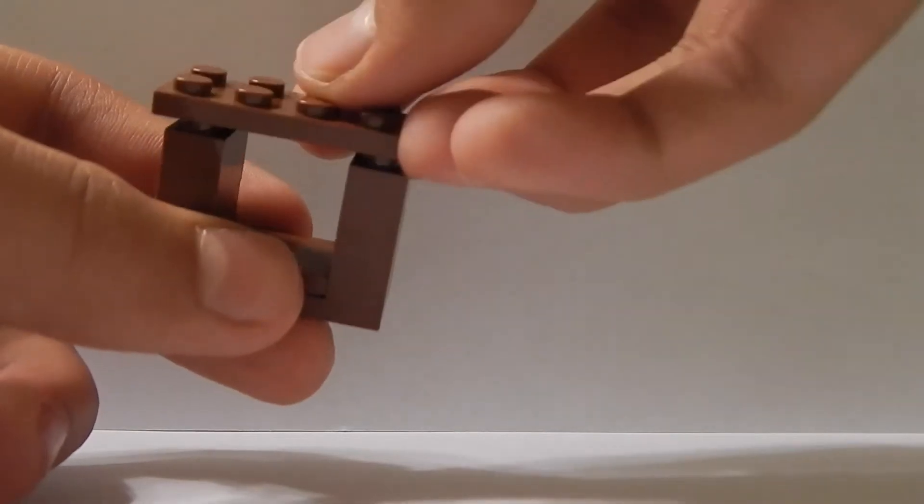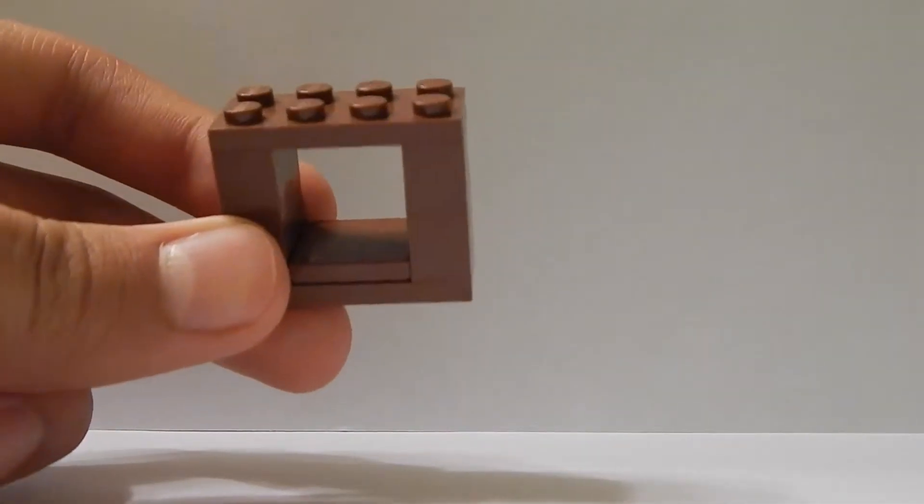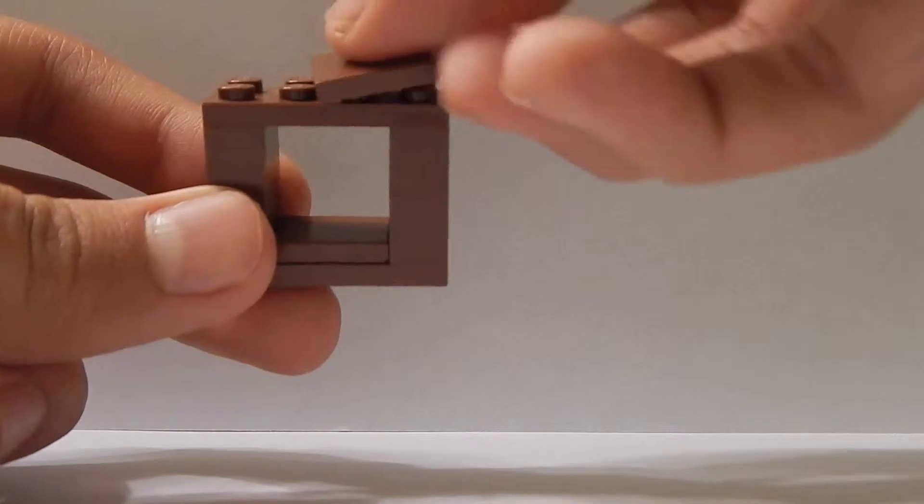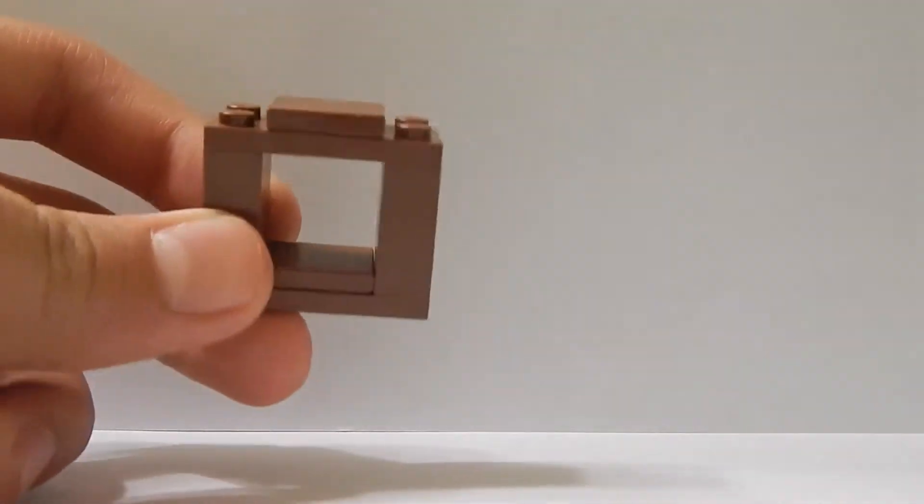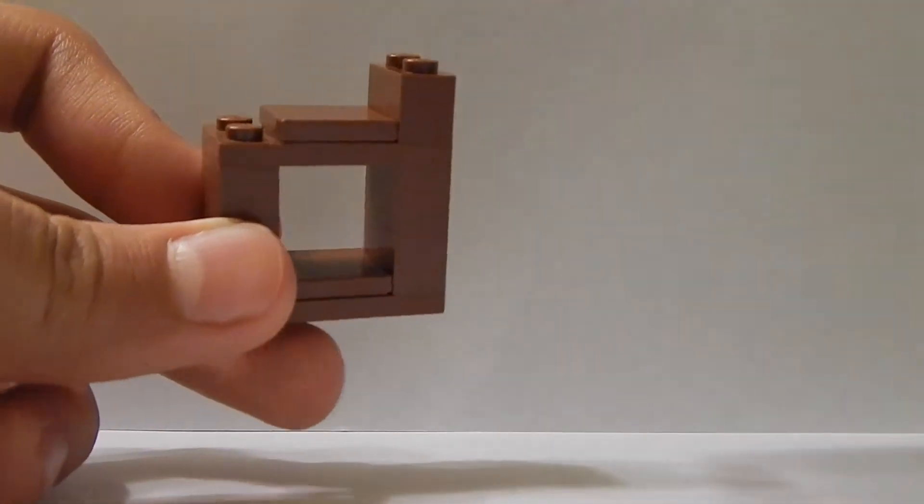In the middle you're going to place another 2x4 plate, and in the middle you're going to place a 2x2 tile. You're basically just going to do the same thing that you did in the first step.